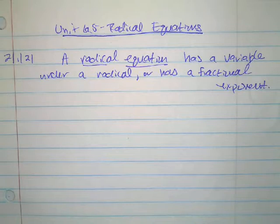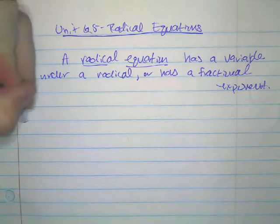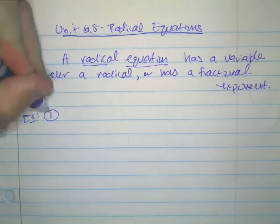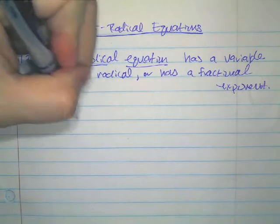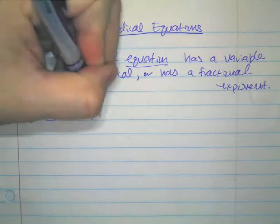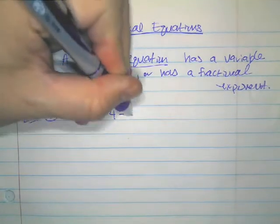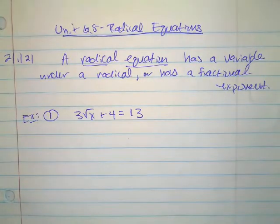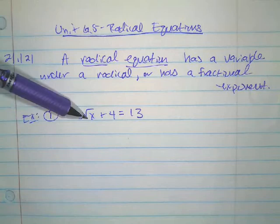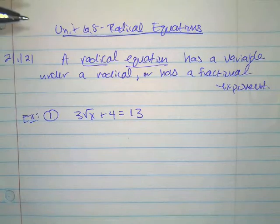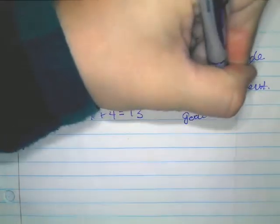For example, here's example number one: 3 times the square root of x plus 4 equals 13. This is considered a radical equation because the variable, the x, is inside the square root. So how do we do this? Your goal is to isolate the radical.